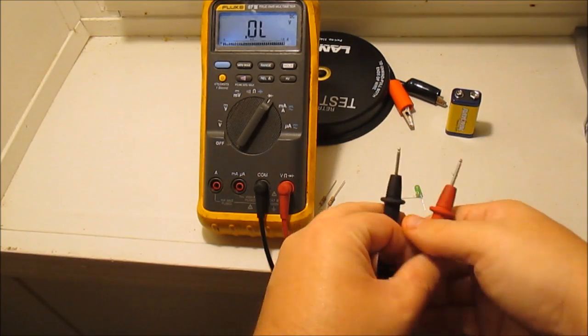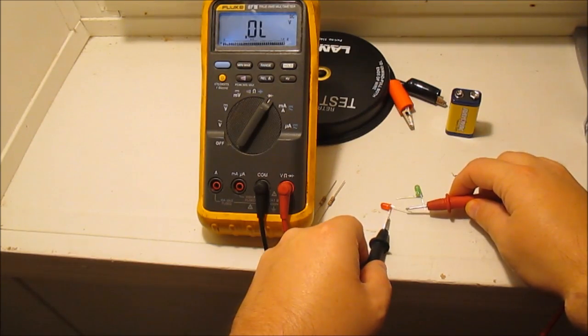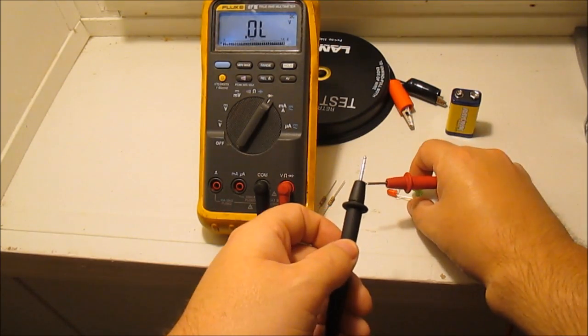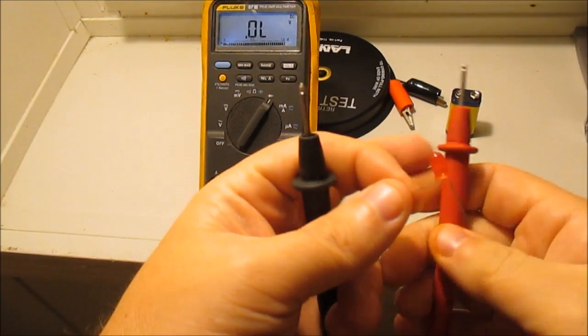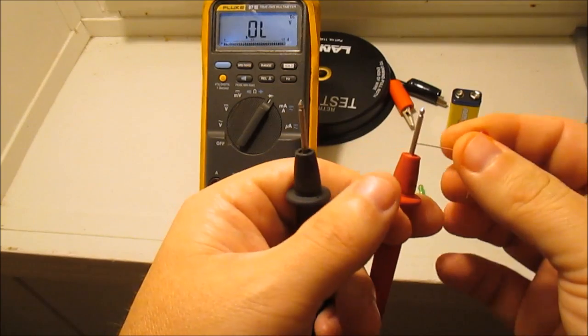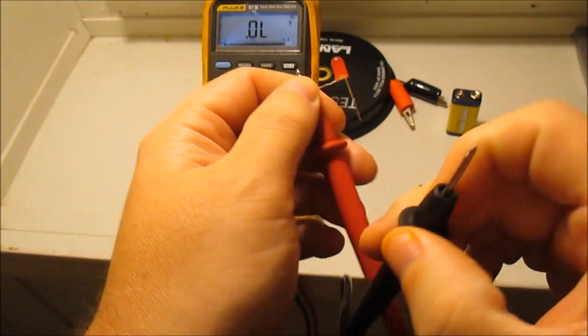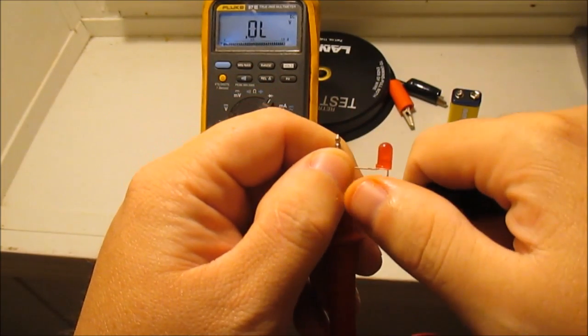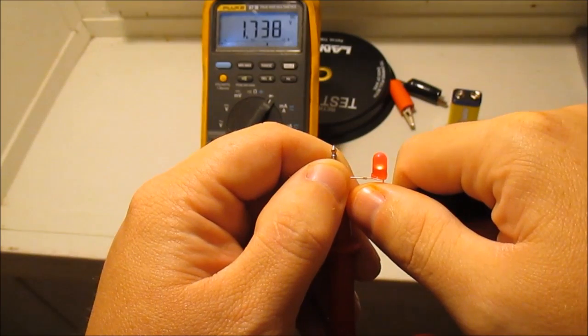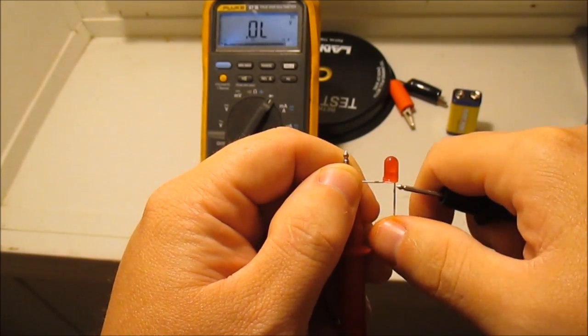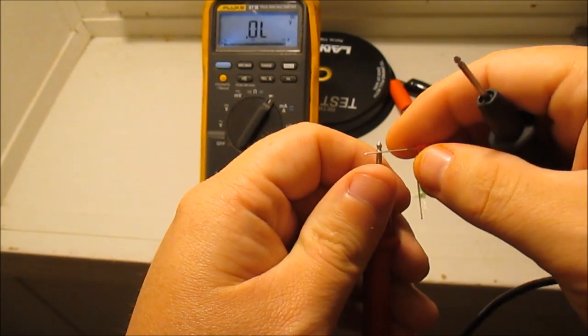When I switch it around, it shouldn't light, which it didn't - not lighting. Let me hook my positive here so I can get it to light for you guys to see. Yeah, that lights and it's putting out about 1.7 volts. See that lights.